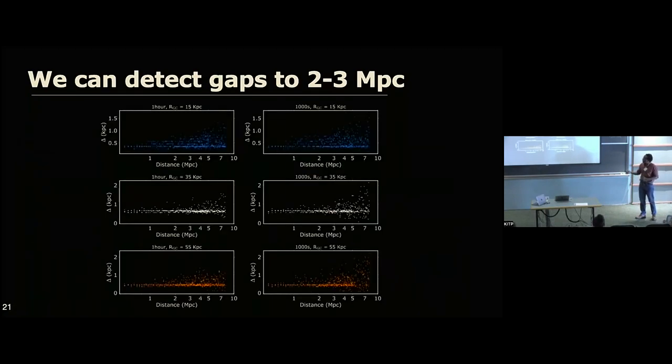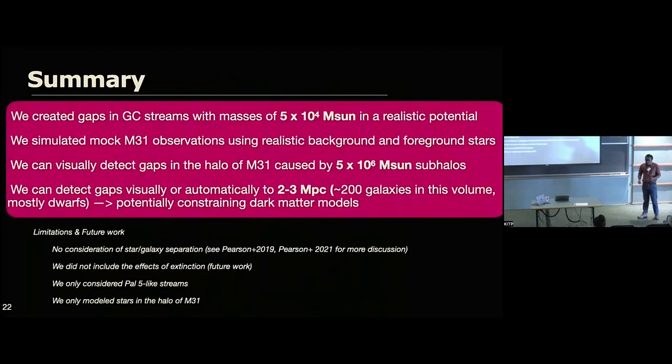So it looks like we can find the gaps at least up to two, three megaparsecs. And here I have some other plots showing that for 55 kiloparsecs, 35 kiloparsecs, and 15, 35, and 55 kiloparsecs. And on this left side, I have one hour. Here I have a thousand seconds. One hour is a little bit better than a thousand seconds, but our conclusion here is that you can see these gaps within two to three megaparsecs, which is exciting because now we can start actually to use these gaps to constrain dark matter models.